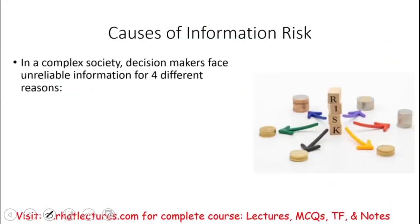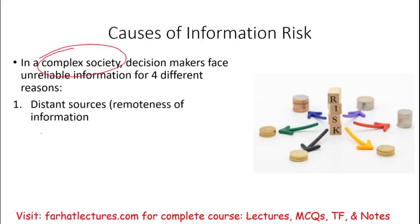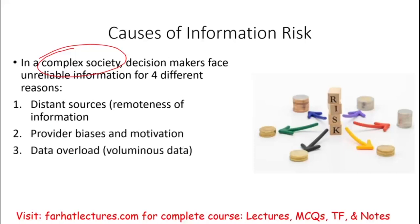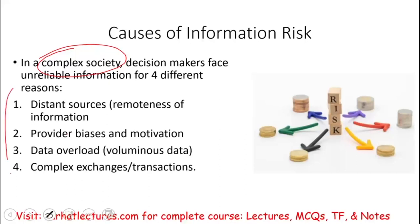There are four reasons why we have information risks. We live in a complex society, and the four reasons are: distant information, which is the remoteness of information; provider bias and motivation; data overload; and complex transactions. I'm going to go over each item separately to explain how each one of these factors leads to what we call information risk.